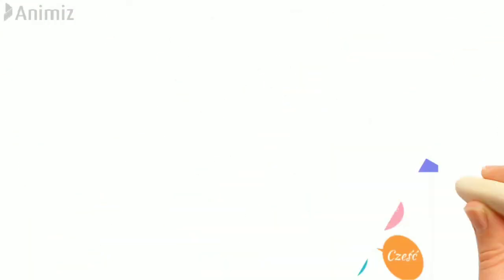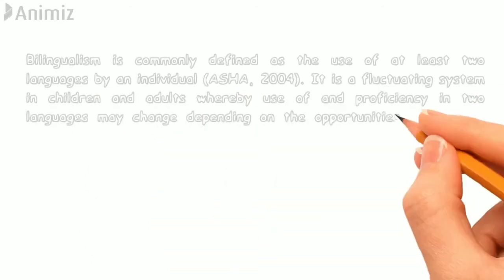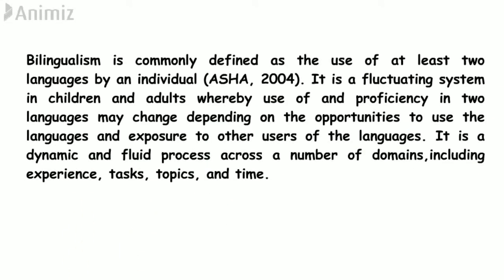Bilingualism is commonly defined as the use of at least two languages by the individual. A person should have mastery of at least two languages to be known as bilingual. Similarly, if a person has mastery in only one language, they are known as monolingual — 'mono' means one. It is a fluctuating system in children and adults whereby use of and proficiency in two languages may change depending on opportunities and exposure.